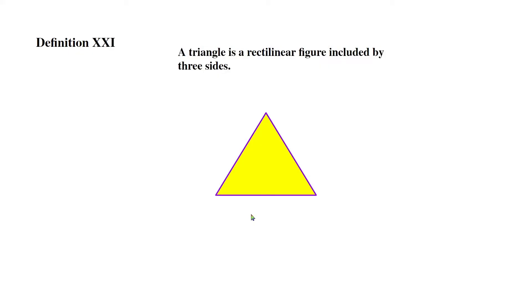Definition XXI: A triangle is a rectilinear figure included by three sides. So a triangle is a rectilinear figure because it is contained by straight lines and straight lines only. But what puts it apart from other rectilinear figures is the fact that this has three sides.